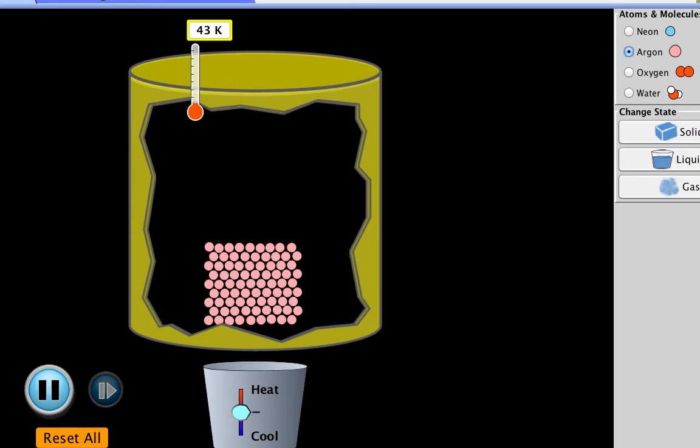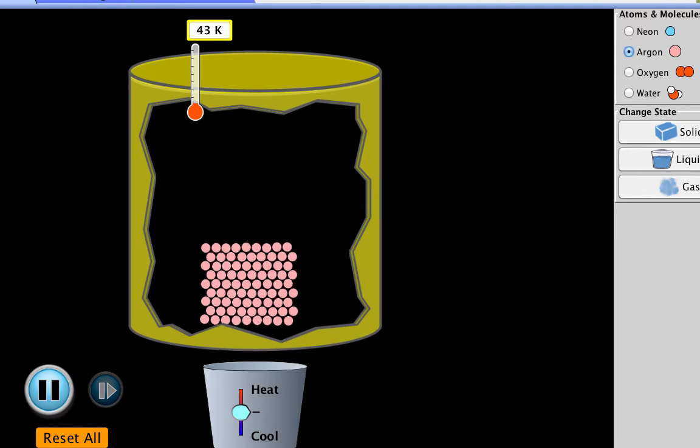As you know, matter exists in three phases: solid, liquid, and gas. Let's take a look at a particle picture of solids and liquids and gases to see how the particles differ in each.